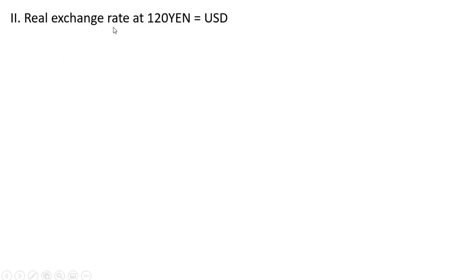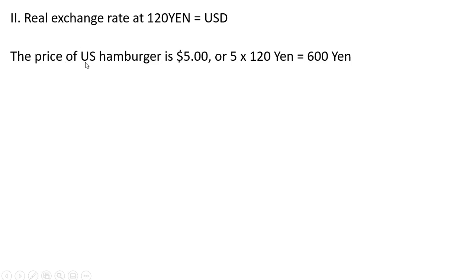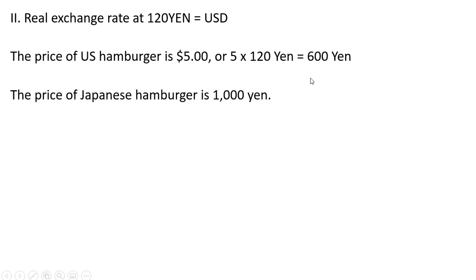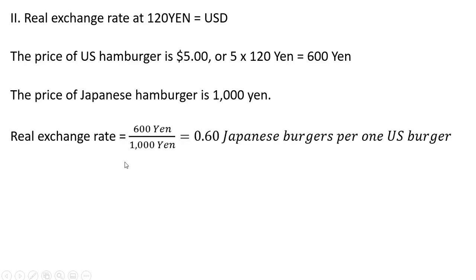Now let's calculate the real exchange rate when the nominal exchange rate increases to 120 yen equals 1 US dollar. The price of a US hamburger under this nominal exchange rate is 5 times 120, or 600 yen, holding the price of the Japanese hamburger constant at 1000 yen. The real exchange rate then is 0.6 Japanese burgers per one US burger.